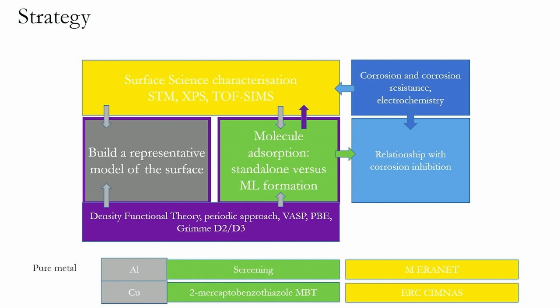We study the adsorption of these organic inhibitors on surfaces, and what we try to do with DFT is to build models representative of the alloys, the metal surface, and also of the adsorption of the inhibitor molecule on the surface. I will talk about screening of inhibitors on pure aluminium — part of the M-ERANET project with the Slovenian team, Ingrid Milošev and Anton Kokalj — and also about adsorption of the inhibitor MBT (mercaptobenzothiazole) on copper, part of the ERC project CIMNAS led by Philip Marcus.